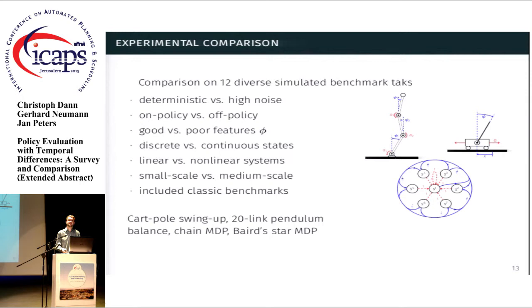either by exactly computing the value function or by being able to approximate it with high confidence by sampling. So among the benchmarks that we chose are classical ones such as cart-pole swing-up or chain MDPs and Baird-Star MDP. But we also, for example, include a 20-link pendulum balancing task, which has a 40-dimensional continuous state space.